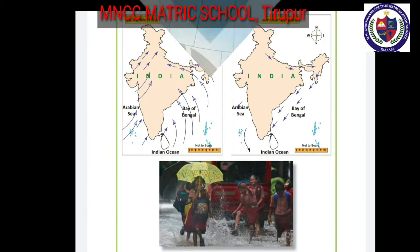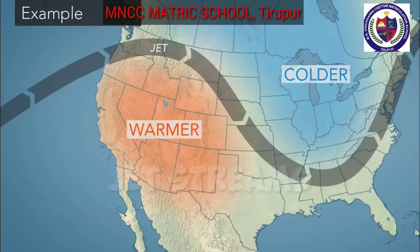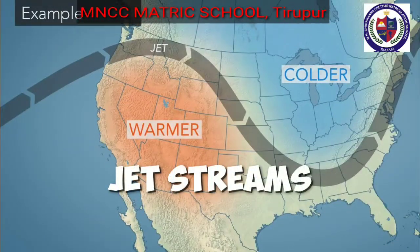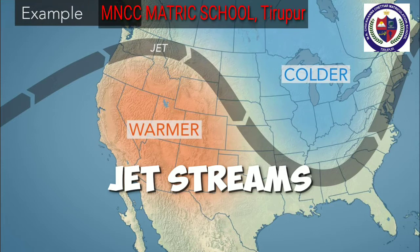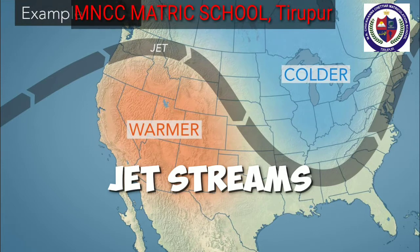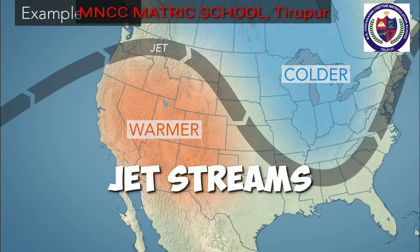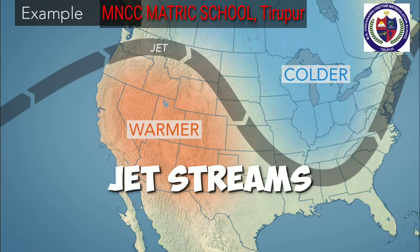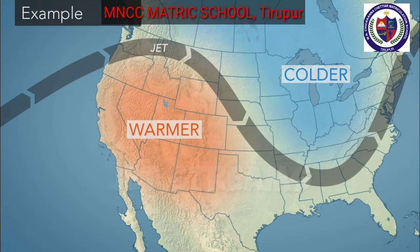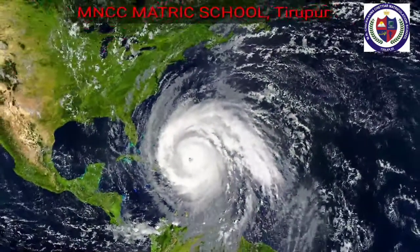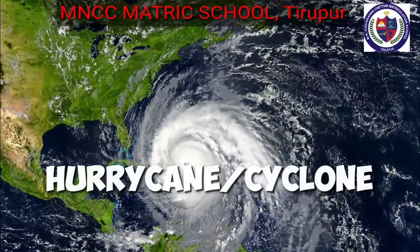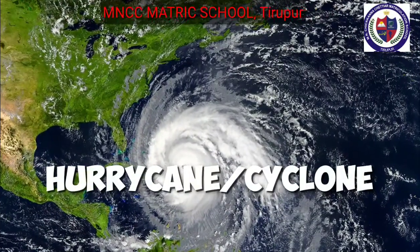Jet streams are air currents in the upper layers of the atmosphere. They can determine the arrival and departure of monsoon winds in India.